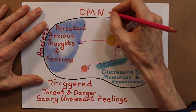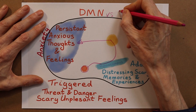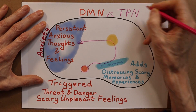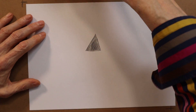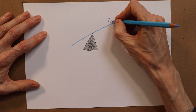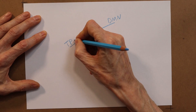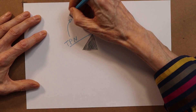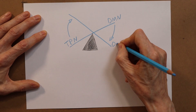The good news is that the default mode network is a paired system. It sits versus another network called the task positive network, and the way these two networks work is: when one is active, it switches the other off. So if your starting position is an overactive, dominating default mode network and a rather weak task positive network, what you can do is grow and strengthen the task positive network so that it is able to counteract your excessively active default mode network.